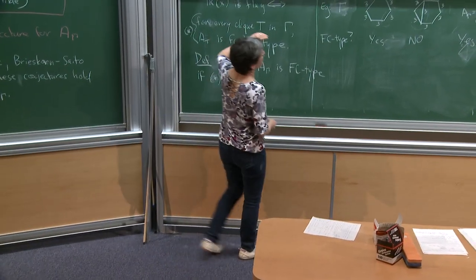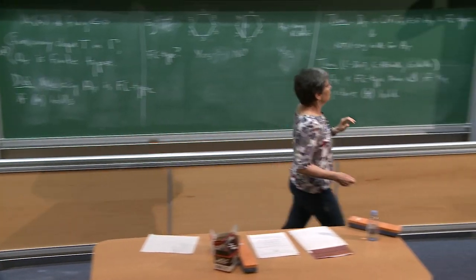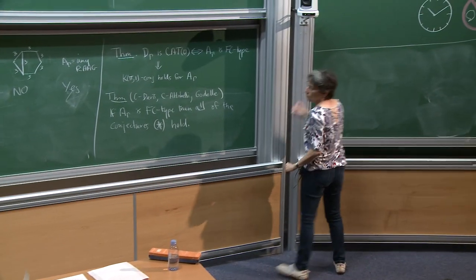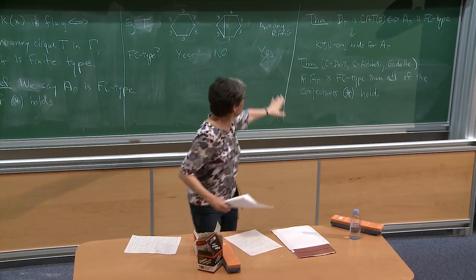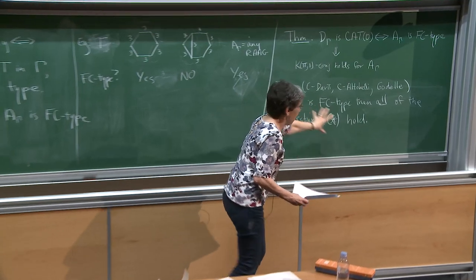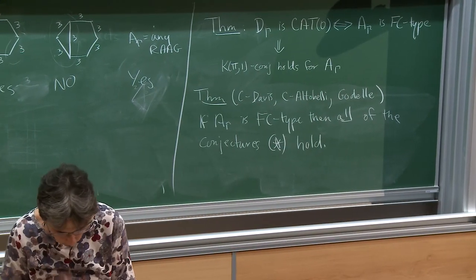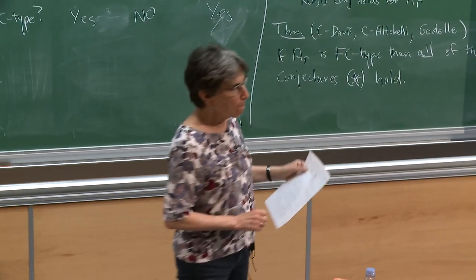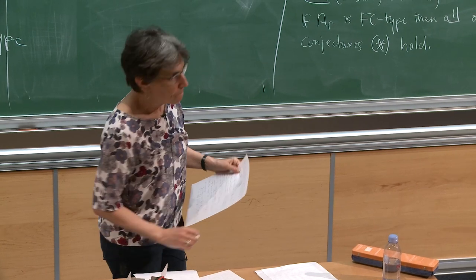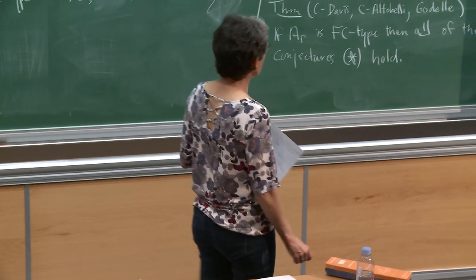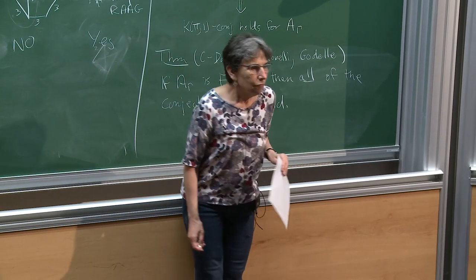Let's construct it: S(γ) for Salvetti. I have my graph γ and I'm trying to construct a finite K(A(γ), 1) space. I start with a single vertex and put on a loop for each generator — s₁, s₂, one for each generator. In the right-angled case you then glue on tori for commuting elements.